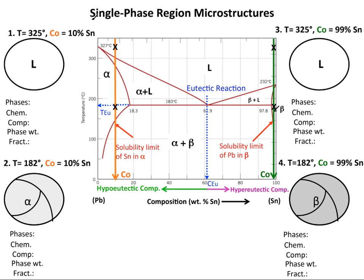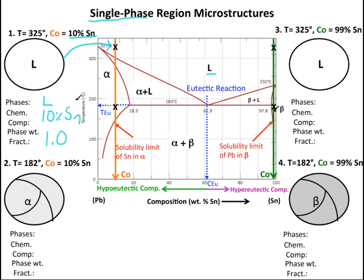Before we talk about two-phase region microstructures, we must first cover single-phase region microstructures. For our first example, we are given a temperature of 325°C and an overall composition of 10% tin, which puts us in the single-phase liquid region. The chemical composition is the same as the overall composition — 10% tin — and the phase weight fraction is 1.0. Here is what single-phase liquid looks like; notice there isn't really a microstructure because it is just liquid, not a solid.